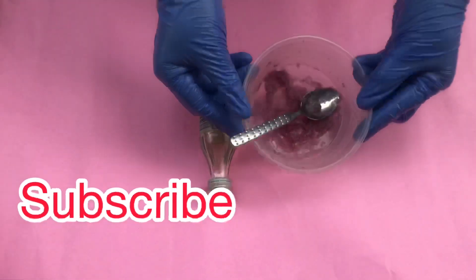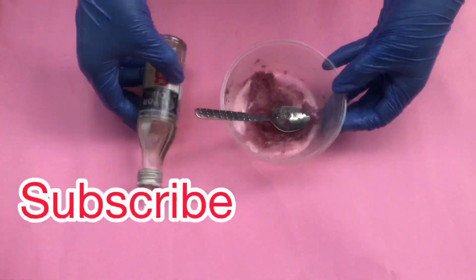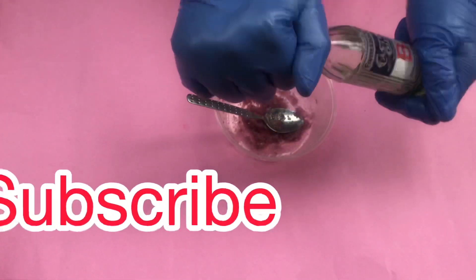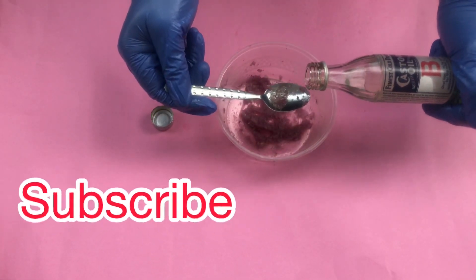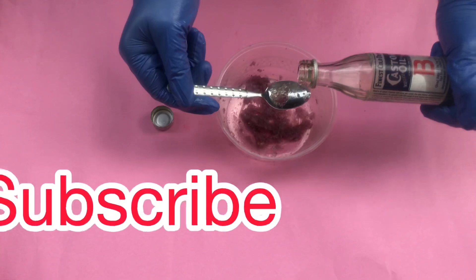So after grating my red onion, this is what it looks like inside a small bowl. You can blend or you can grate, either way. So now I'm going to add my castor oil into my bowl where I have my red onions.